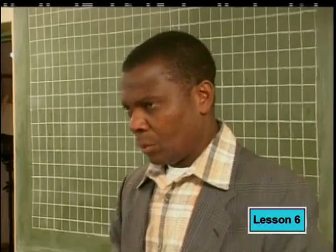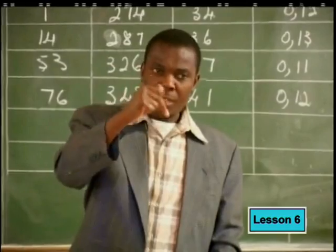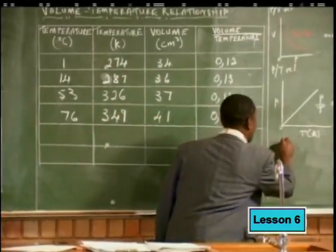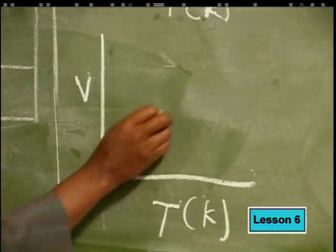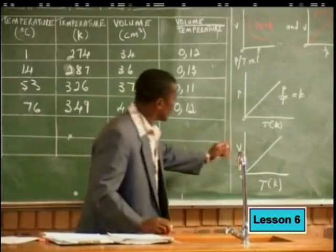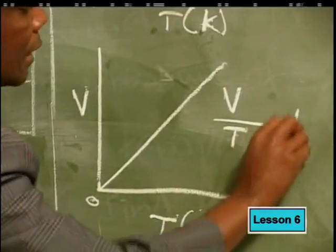Let's join Mr. Mashapa as he discusses this. What shape did you get, Hopolang? In our group, we got a straight-line graph. Does that straight-line graph pass through the origin? Yes. If it passes through the origin, then from the volume-temperature relationship — remember, temperature is in Kelvin — we have a straight line with a certain gradient, meaning that volume divided by temperature gives us a constant.